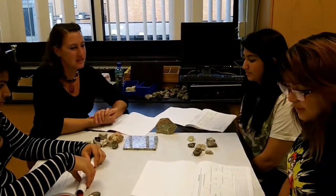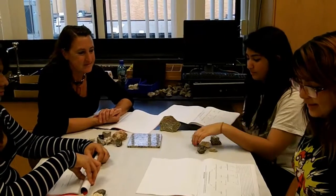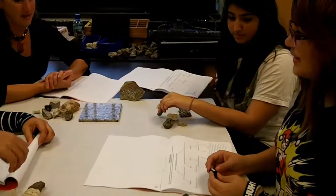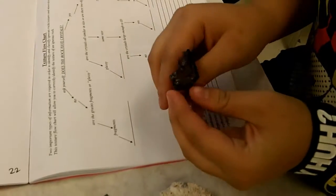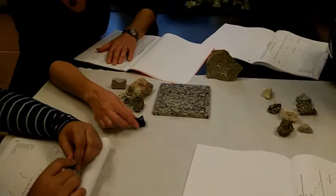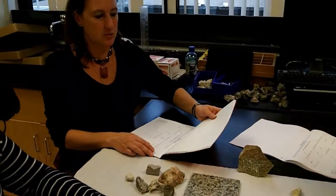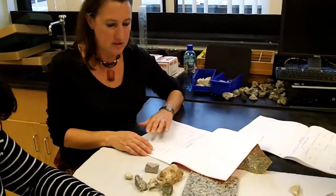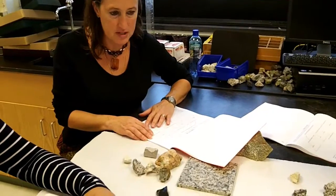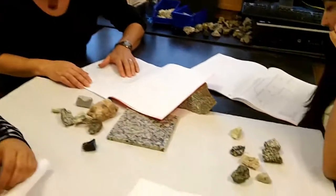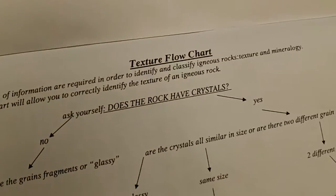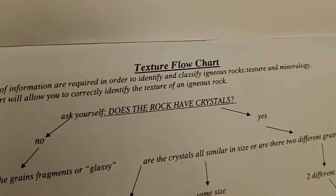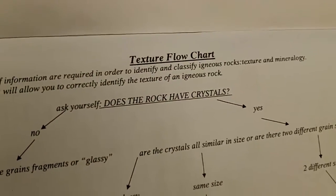Let's pick a sample rock. We'll start with this nice shiny black rock. Each person has one of these pieces of black shiny rock. We're going to use the texture flowchart. The first thing on here says: ask yourself, does the rock have crystals? So if we pick this rock up and look at it, can we see anything that looks like crystals?